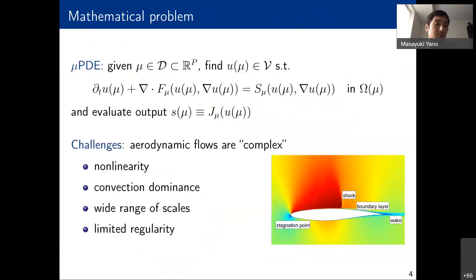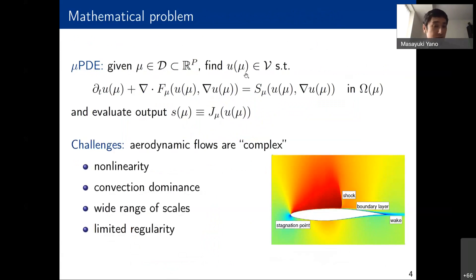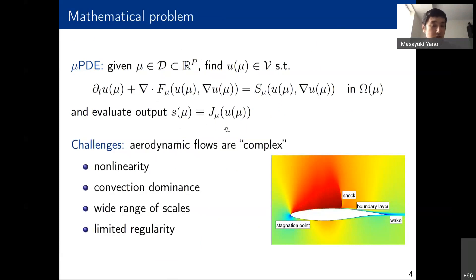In terms of the mathematical problem, here is the general formulation of the parameterized PDE. We start with a parameter mu that lies in a p-dimensional space, and given that we find a state u(mu) satisfying conservation laws like Navier-Stokes or Reynolds-averaged Navier-Stokes equations. We then evaluate the output s(mu) — things like lift, drag, and moment.